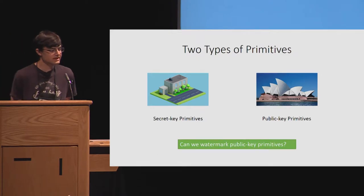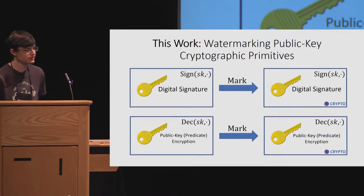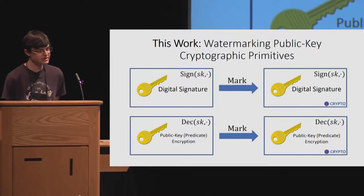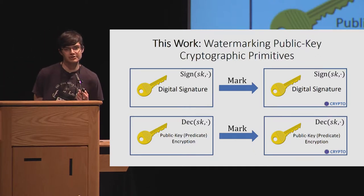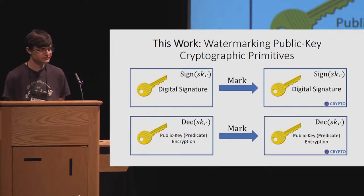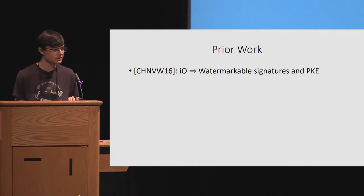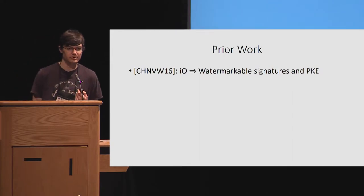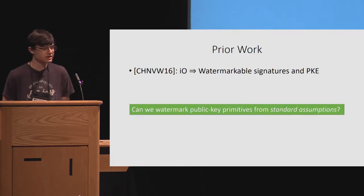So in this work, we ask: can we watermark public key primitives? In particular, the public key primitives we watermark are digital signatures — specifically the signing functionality — and public key attribute-based or predicate encryption — specifically the decryption functionality. What was known prior to our work? In the work of Cohen et al., they did show, assuming indistinguishability obfuscation, how to build watermarkable signatures and public key encryption. So a natural question for our work is: can we watermark these public key primitives from standard assumptions?